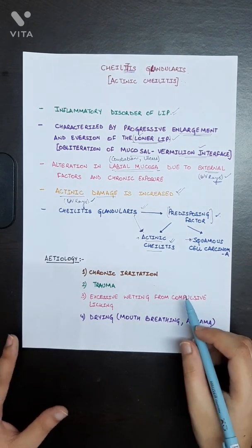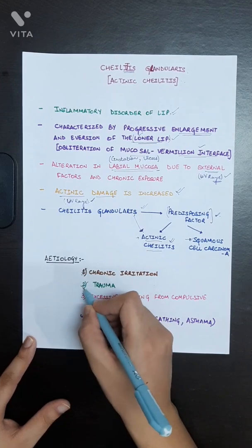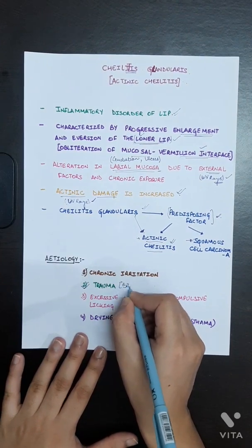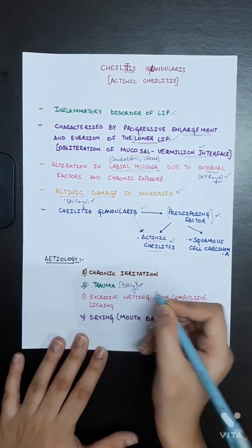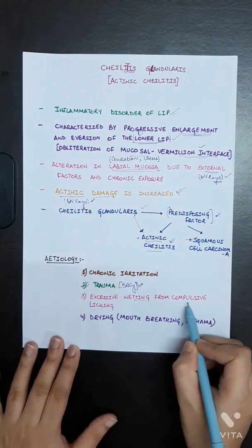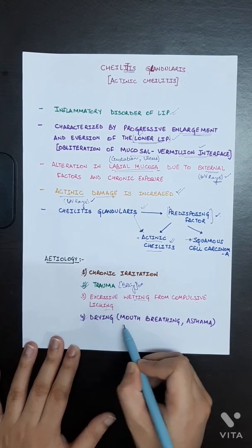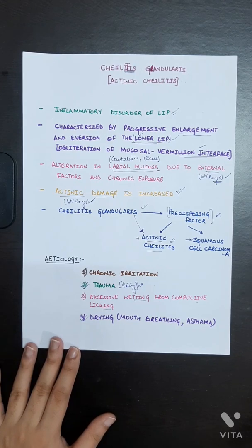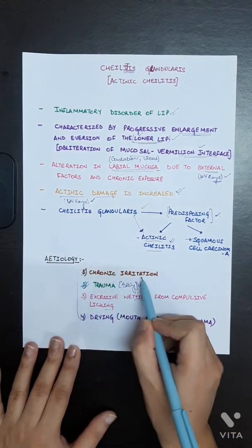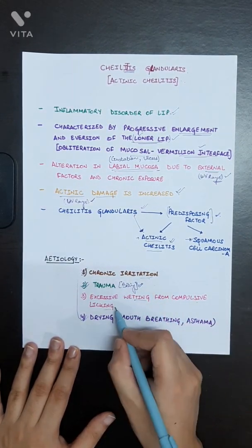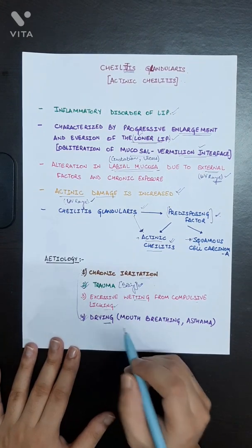The etiology of Cheilitis Glandularis includes chronic irritation and trauma. Some children have a habit of biting their lower lip, so self-inflicted biting can cause it. Excessive wetting from compulsive licking, or drying of lips caused by mouth breathing, asthma, or other factors, are also etiological factors.